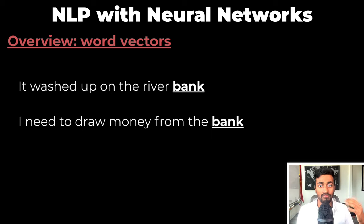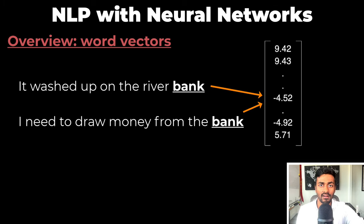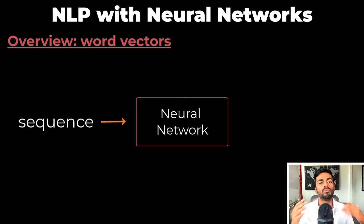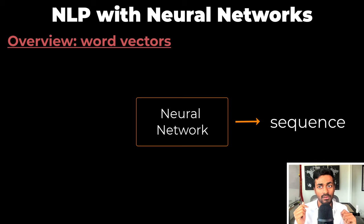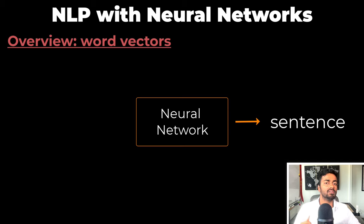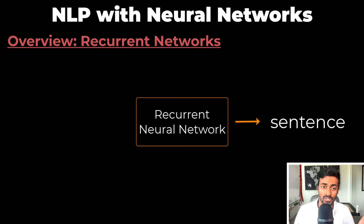But here we run into another problem. Words have different meanings depending on their context, and these word2vec architectures give the same numeric representation for a word even though the context might be different. Hence, we want a neural network architecture to take in and return a sequence of words — which is a sentence. And so recurrent neural networks become useful.